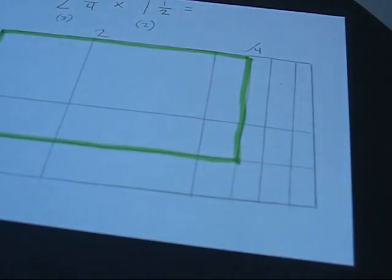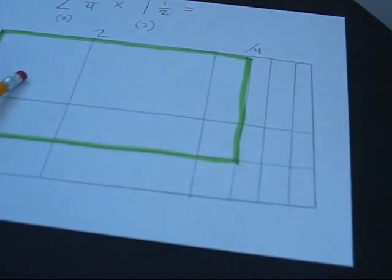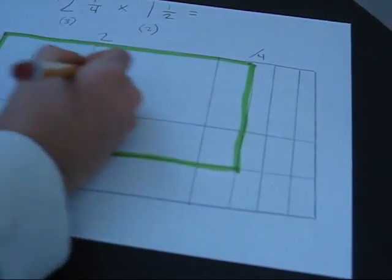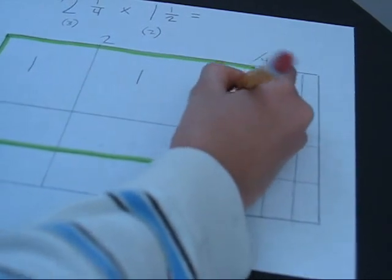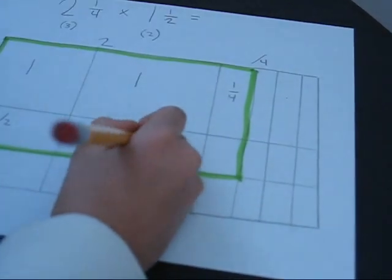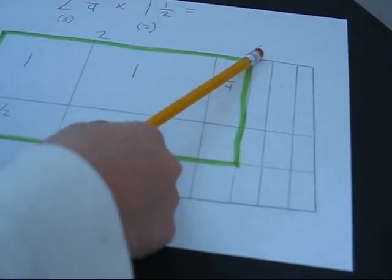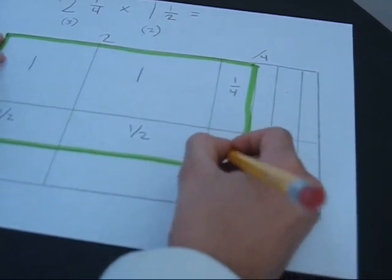Now we're going to get our pencil and mark if each section is a half, a whole, a fourth, or an eighth. This is one whole. This is also a whole. This is one fourth. This is one half. This is also one half. And this is one eighth, because four times two is eight. One eighth.